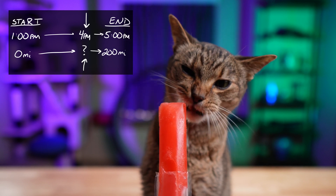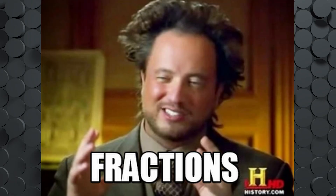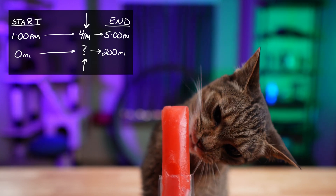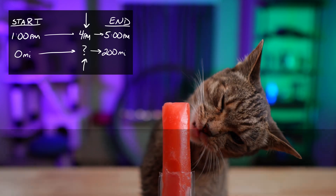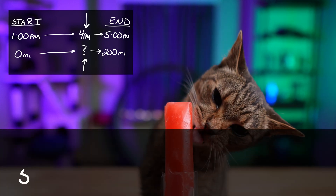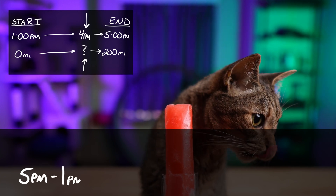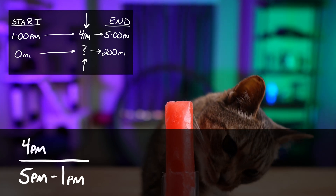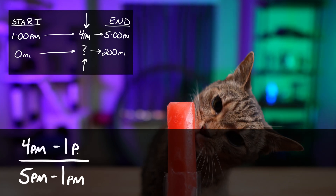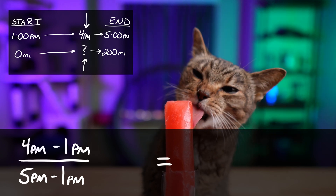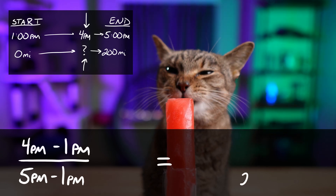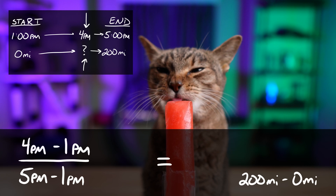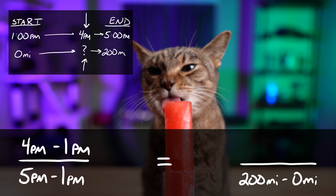The key to interpolation is fractions, and more specifically, percentages. You're going to set up two fractions: one with the information you know and one with the information you're trying to find. The denominators of your fractions are the total range of values from the beginning of the road trip to the end of the road trip. And the numerator is the partial range up to the point that you're interested in.